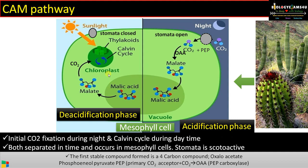The advantage of this pathway is that even without opening the stomata during daytime, the Calvin cycle can run using the carbon dioxide produced by the decarboxylation of malic acid stored in the vacuole during nighttime. The key point in the CAM cycle is that initial carbon dioxide fixation occurs during night and the Calvin cycle occurs during daytime — both are separated in time, and both reactions occur in mesophyll cells.